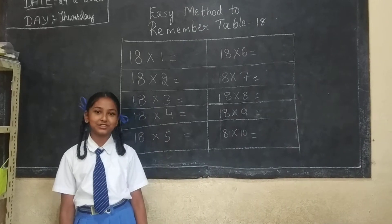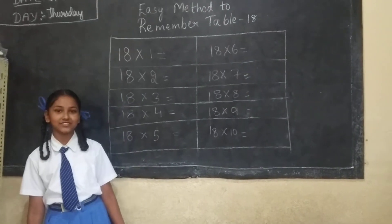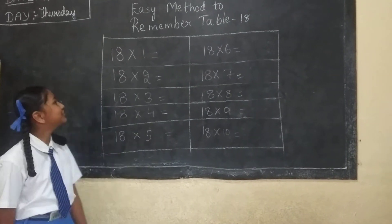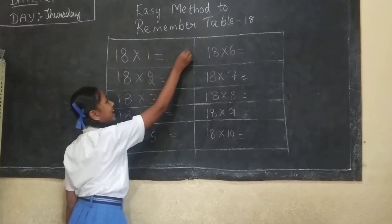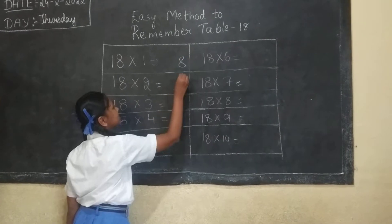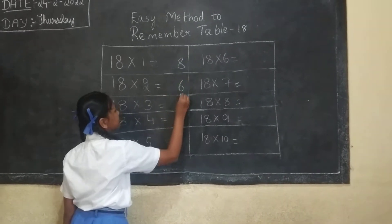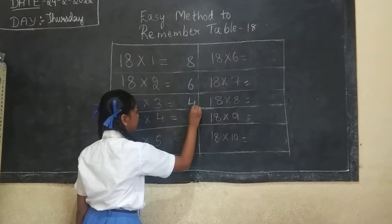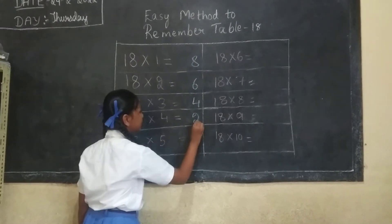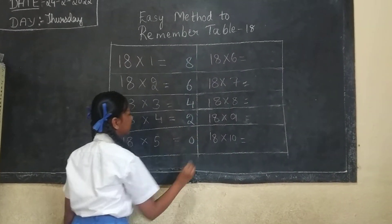Today I am going to teach how to remember easily the 18 times table. We should write here: 8, 6, 4, 2, 0.